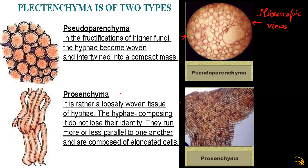For prosenchyma, it is rather a loosely woven tissue of hyphae. The hyphae composing it do not lose their identity; they run more or less parallel to one another and are composed of elongated cells. The cells are elongated and distinctively visible. In the fructifications of higher fungi, the hyphae become woven and intertwined in a compact mass for pseudoparenchyma.